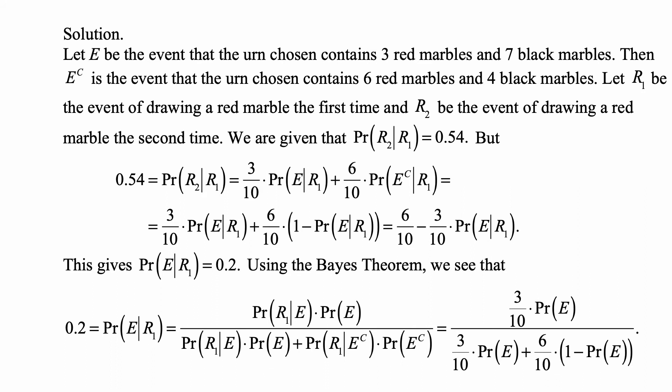So that's 3/10 times probability of E given r1 plus 6/10 times 1 minus probability of E given r1. That's 6/10 minus 3/10 times probability of E given r1, and from this we get probability of E given r1 to be 0.2.